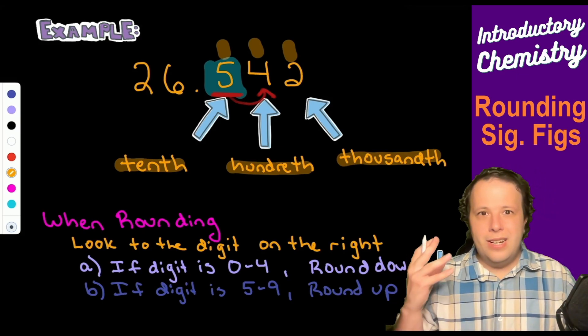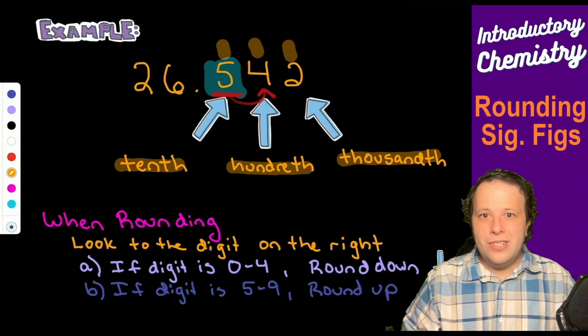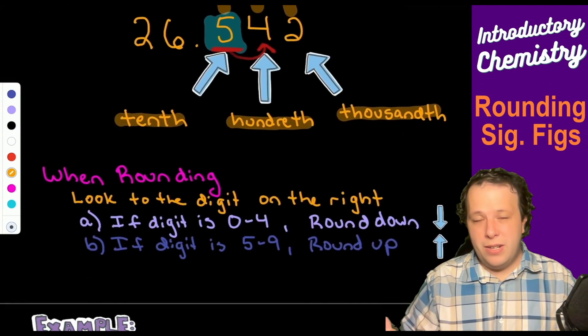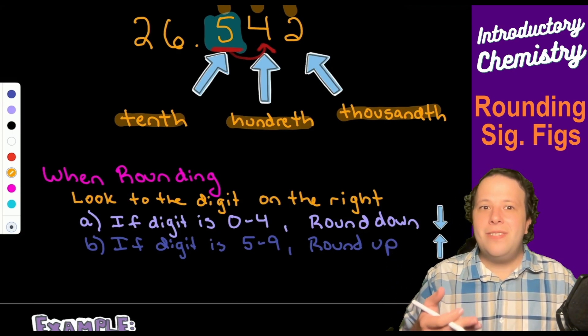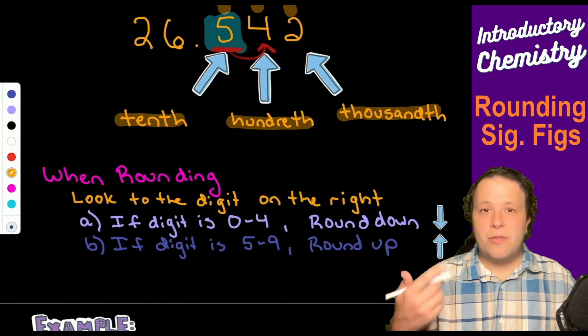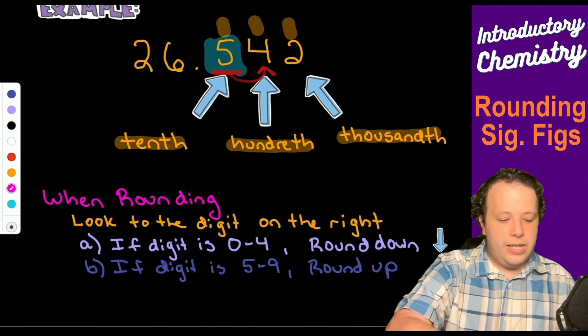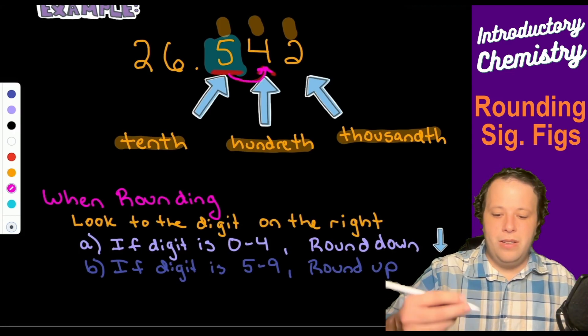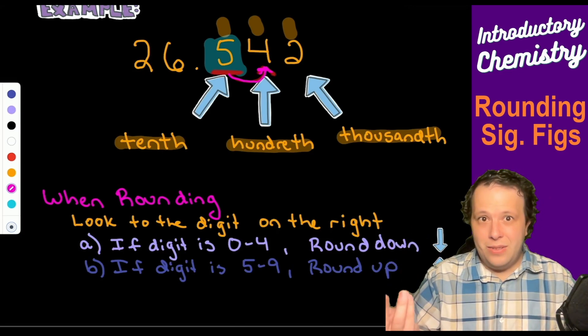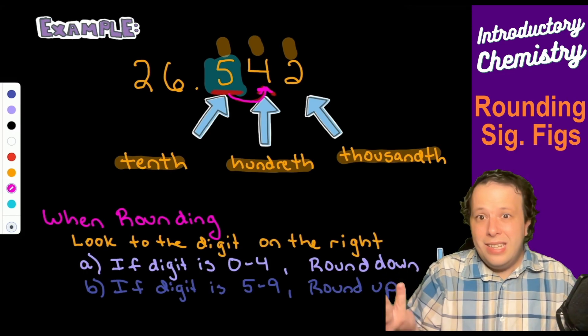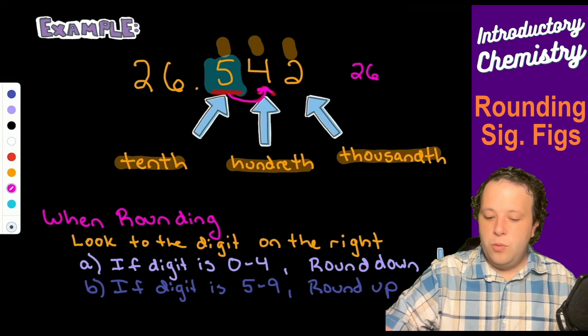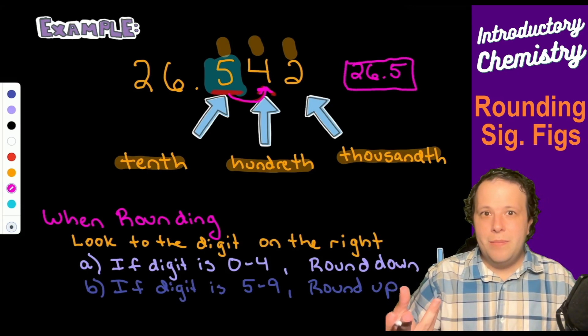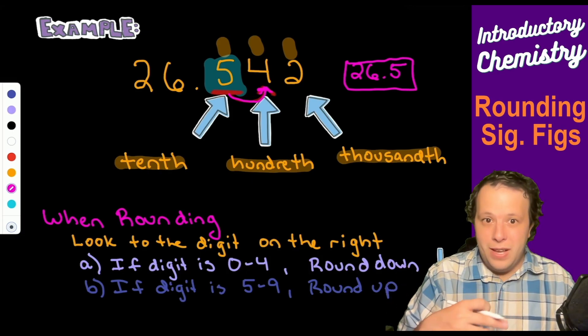If the digit is zero to four, you round down. If the digit to the right is five to nine, you round up. In this case, five was next to four, meaning that we round down. So our final number is going to be 26.5 because we had a four next to it - we want the lower value to represent that.